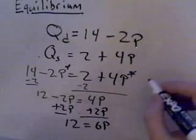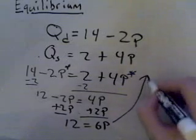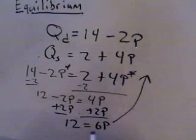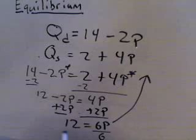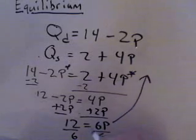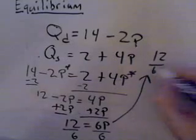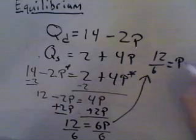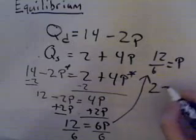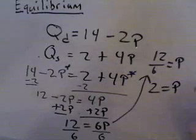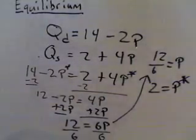So this is going to leave me with 12 equals 6 times the price. All right, I'm going to move this up over here a little bit. Start over. If we divide by 6 on both sides, that's going to give us 12 over 6 is equal to P. We know that simplifies to 2 is equal to P, which is going to give us P star.